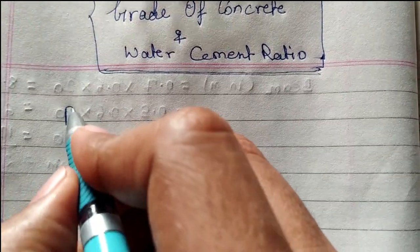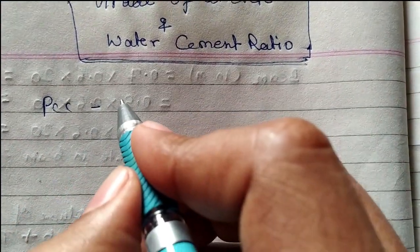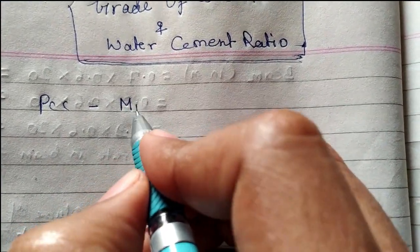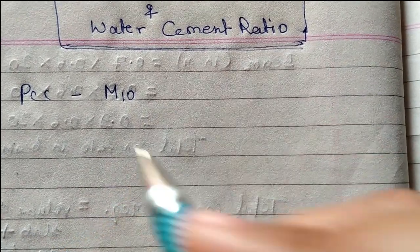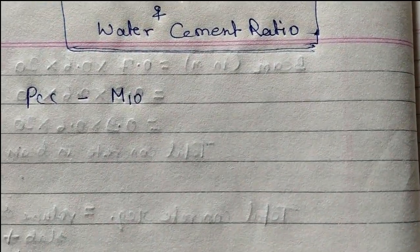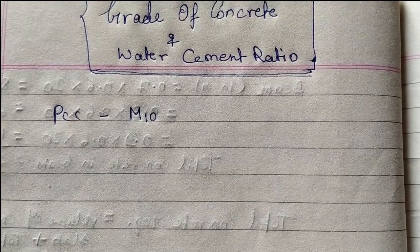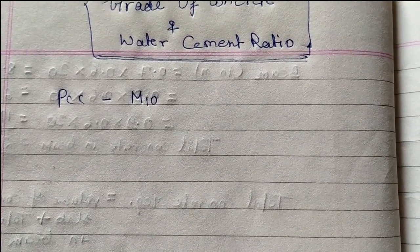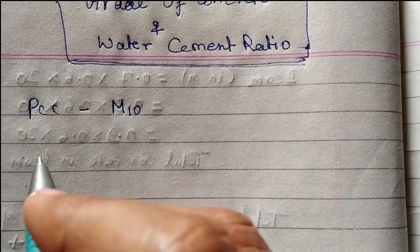Like for PCC, M10 is used. This way, every structure has different types of concrete. There are different types of concrete grades.